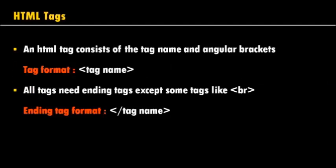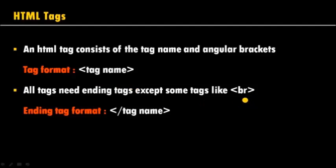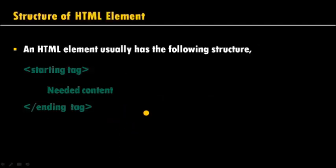HTML tags are HTML element names enclosed within angle brackets. See here — this is the format for an HTML tag. The tag name is enclosed within angle brackets. In HTML, all tags except some tags like the break tag have ending tags. This is the format for an ending tag — the tag name preceded by a forward slash.